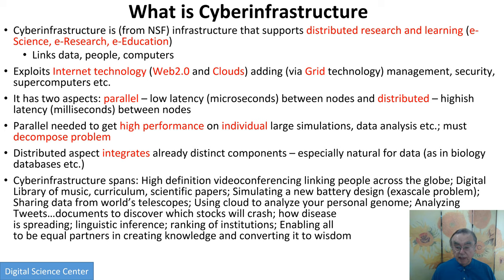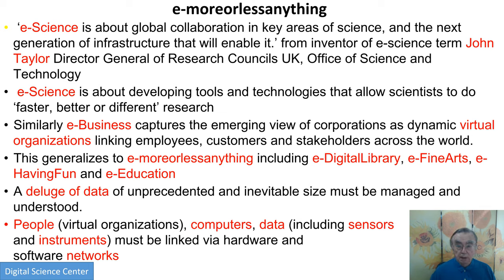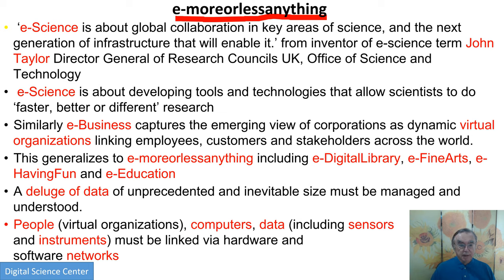This cyber infrastructure is meant to provide a more equal world because we can all access all this data. We can have 'e' in front of anything — eScience, eBusiness, eLearning. Around 20 years ago science had 'e' added to it. There was a fellow called John Taylor in the United Kingdom who first associated that word. Cyber infrastructure and eScience are closely related concepts — eScience is about the cyber infrastructure that will support science, just as eBusiness is about technology to support electronic business.